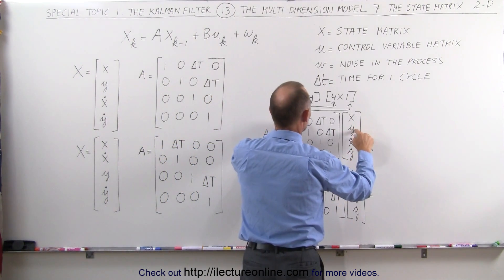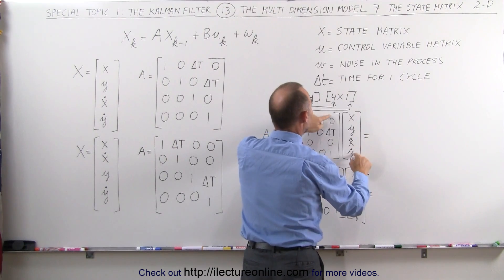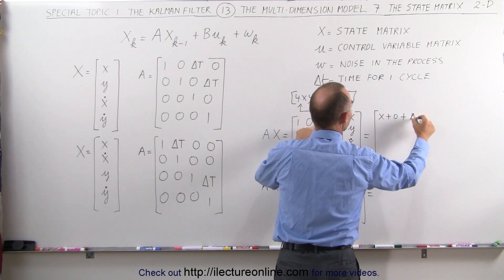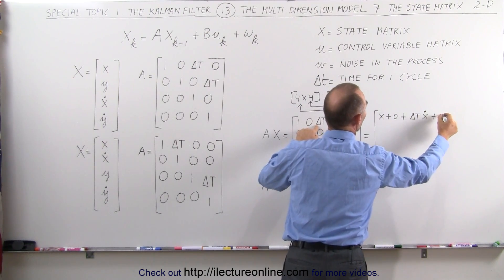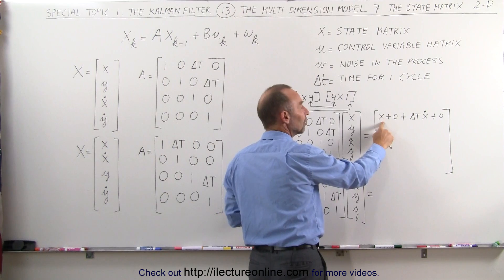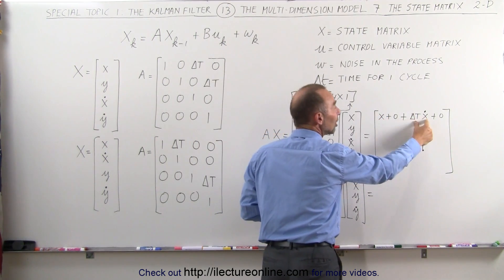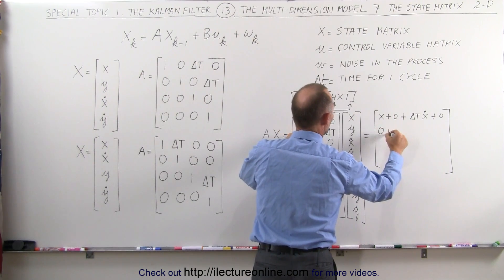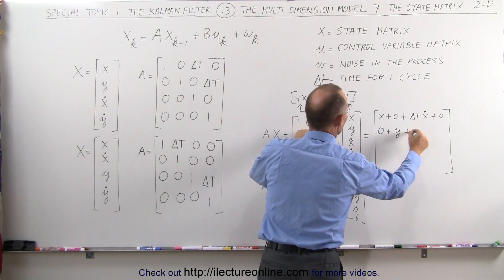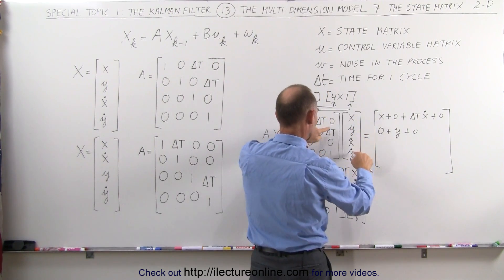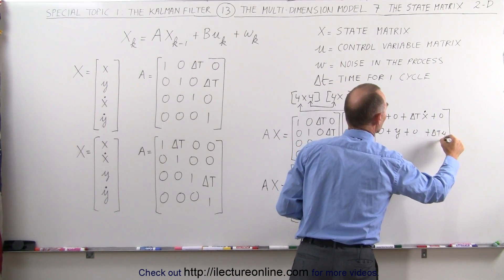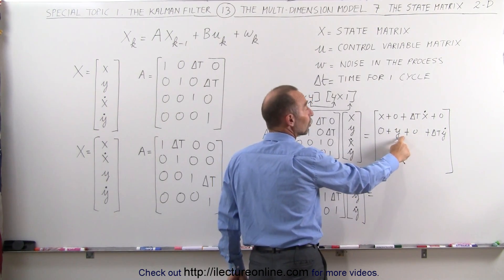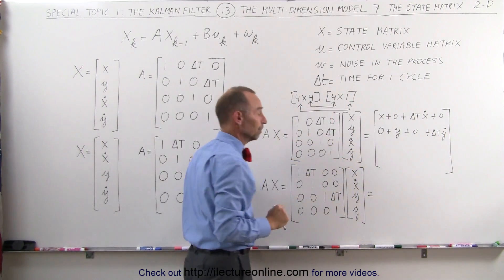The first element becomes x plus delta T times x-dot, which is the velocity in the x direction. This means the x position is updated by taking the previous position plus the change in position due to the velocity in the x direction. The second element gives us y plus delta T times y-dot. The new position in the y direction equals the previous position plus the change in position due to the velocity in the y direction.